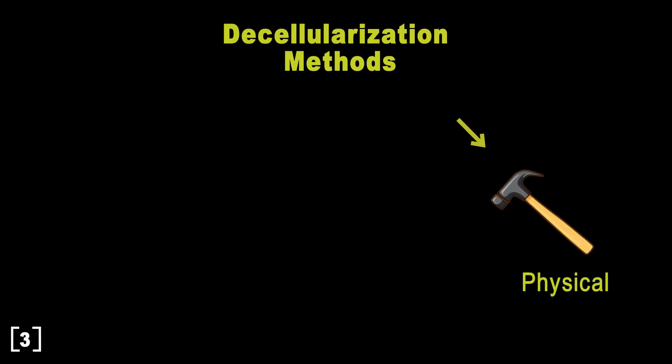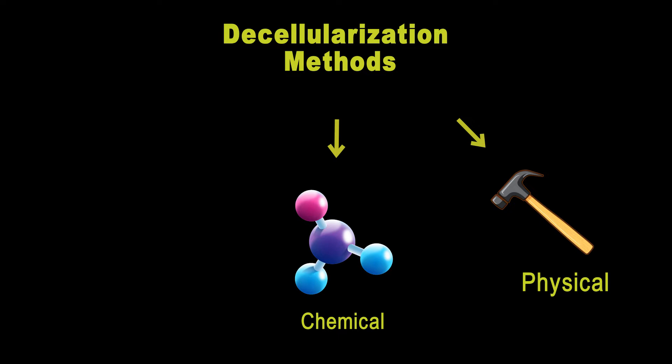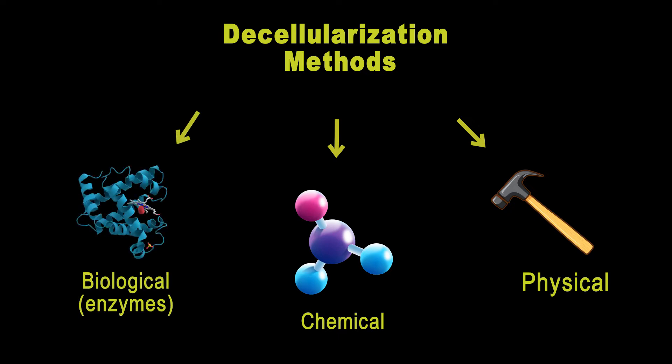There are different ways to do this. One way is to use physical methods like applying mechanical forces to the tissue to break apart the cells and release the ECM. Another option is to use chemical methods like detergent or acids to dissolve the cells and leave behind the ECM. And if you want to get really fancy, you could use enzymes like DNAs and RNAs to break down the donor genetic materials.